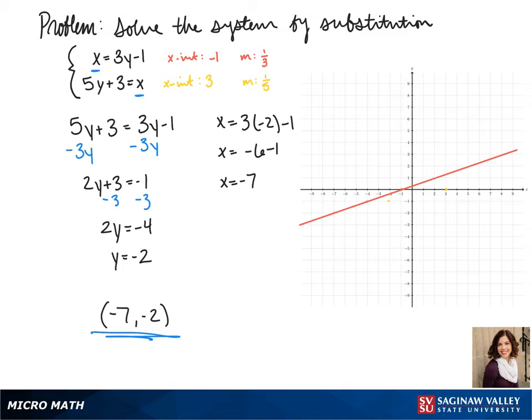And on our second line, our x-intercept is 3, and our slope is 1 fifth. We can see that they intersect at negative 7, negative 2.